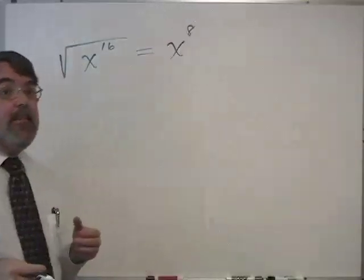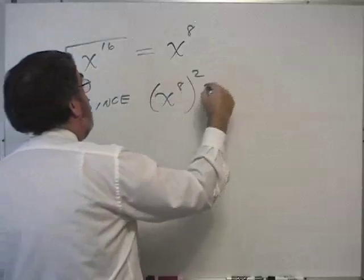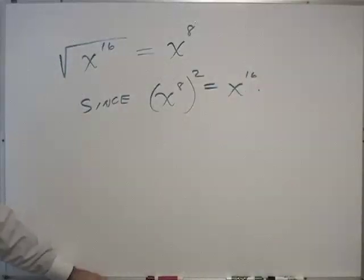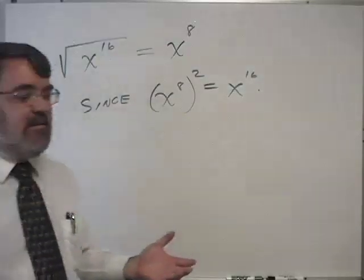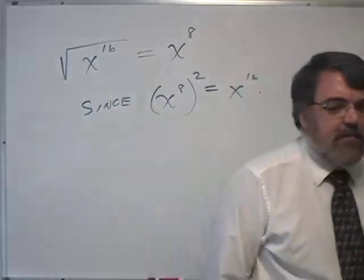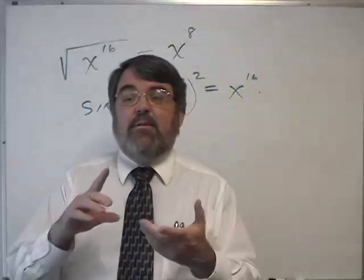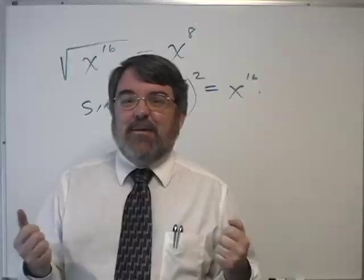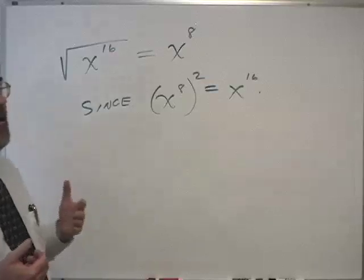Since x to the eighth squared is x to the sixteenth, the answer is x to the eighth. You're taking half the exponent when you're taking a square root. Textbooks don't seem to mention this - they ask you to do things in other ways. We divide exponents when you apply a radical sign.